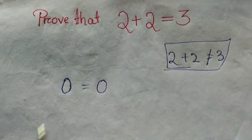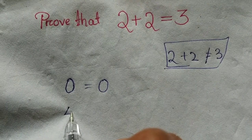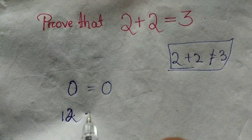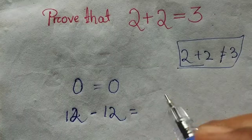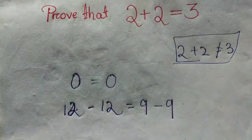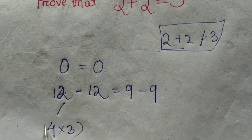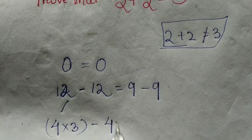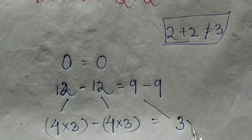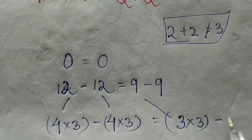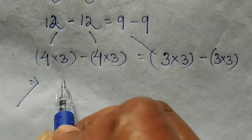0 is equal to 0. 0 is such that 12 minus 12 is equal to 9 minus 9. This 12 is equal to 4 into 3 minus 4 into 3. That equals to 9 is equal to 3 into 3 minus 3 into 3.